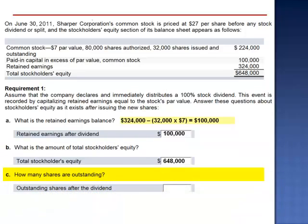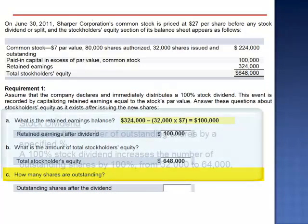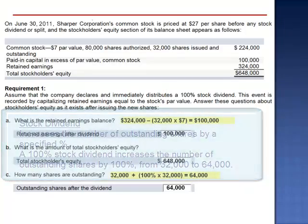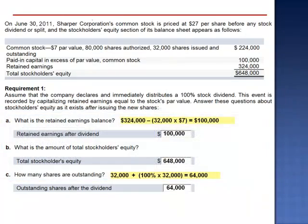How many shares are outstanding after the dividend? We had 32,000 shares previously outstanding, plus 100% of 32,000. 64,000 shares are outstanding after the dividend.